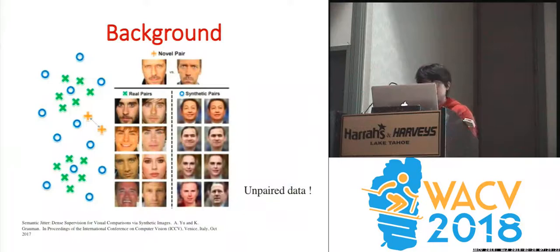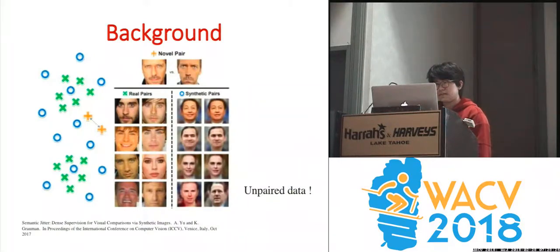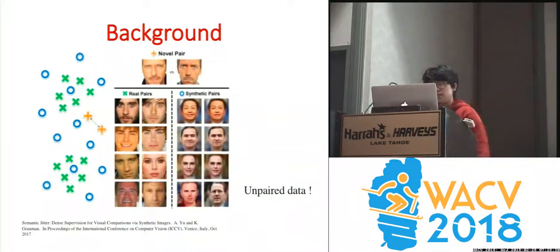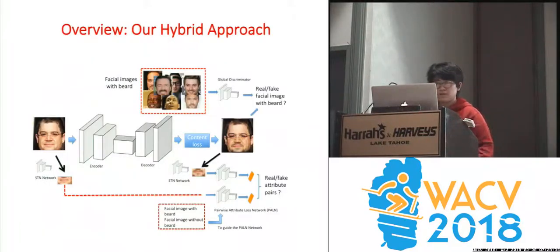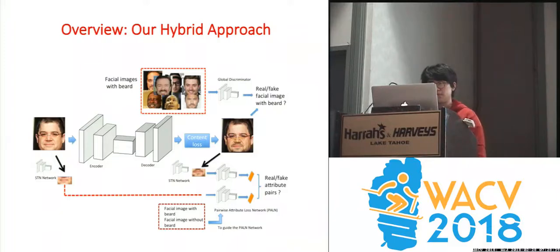Existing approaches have demonstrated that visual 3D objects have improved the performance of real object detectors. On the other hand, little research has been done for facial images. To address the empirical data problem, we propose the following hybrid network.